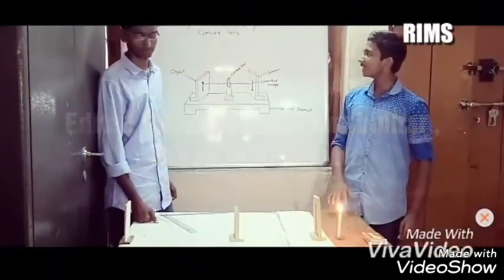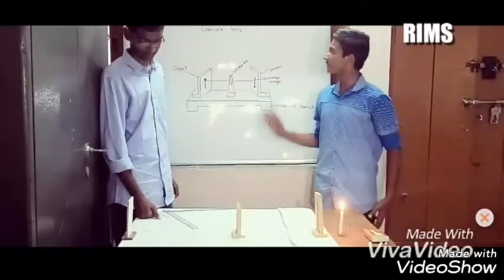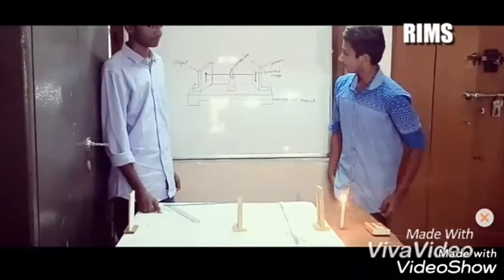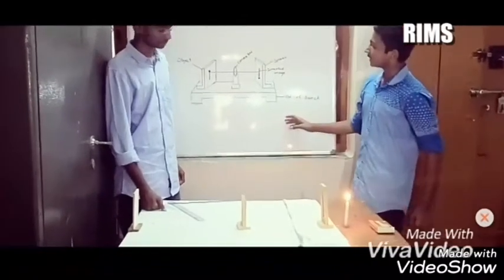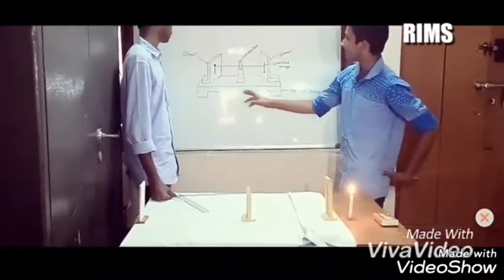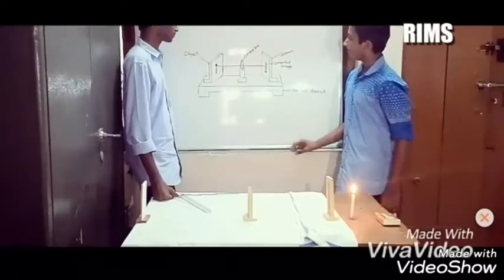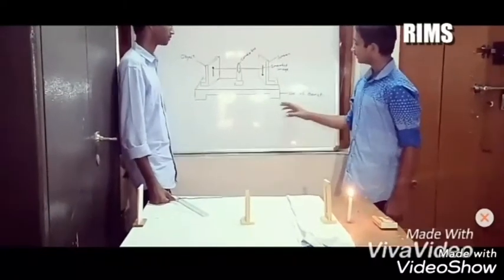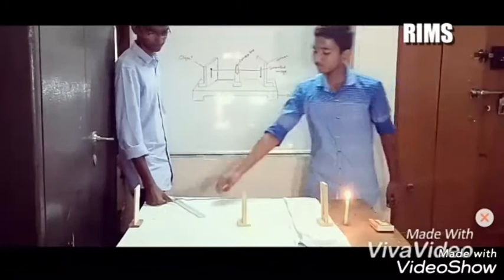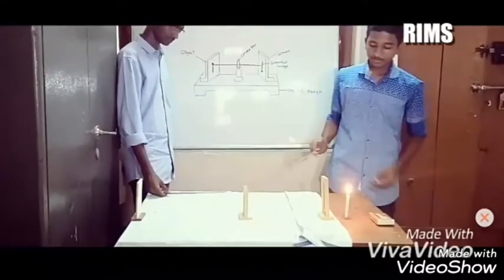We are here to discuss determining the focal length of a convex lens. We can observe in the diagram that there are an object, convex lens, screen, and a scale to measure the lens. So we start the experiment.